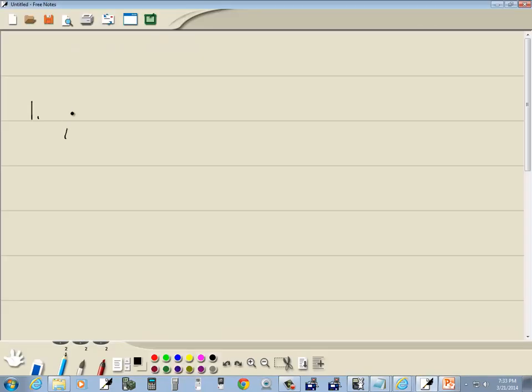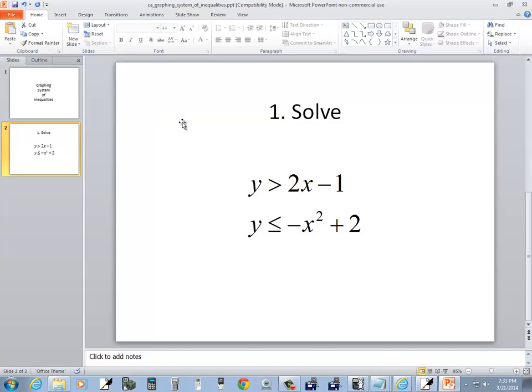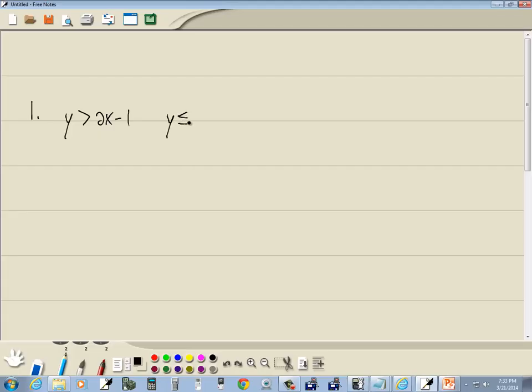We've got y is greater than 2x minus 1, and y is less than or equal to negative x squared plus 2.